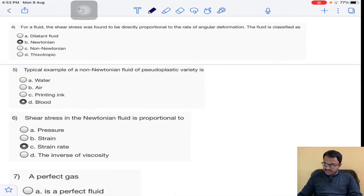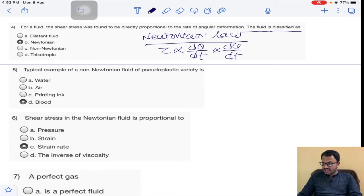Next question: for a fluid, the shear stress was found to be directly proportional to rate of angular deformation. Then fluid is classified as Newtonian. According to Newton's law, shear stress is directly proportional to rate of angular deformation dθ/dt, and also directly proportional to velocity gradient du/dy. If this law is obeyed by any fluid, we say it is Newtonian fluid. Answer is B.